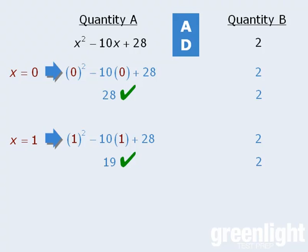If you decide to plug in more values, and you get contradictory results, then you can be certain that the answer is d. Conversely, if each result keeps showing that quantity a is greater, then it's quite possible that a is the correct answer. At this point, the choice is up to you, depending on the time you have remaining in the test.